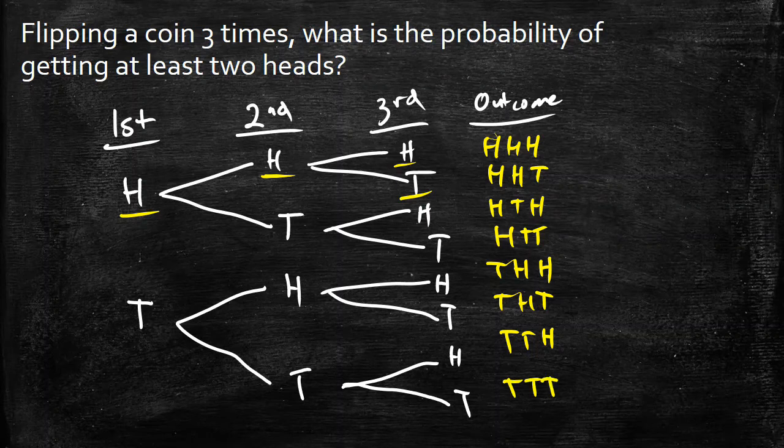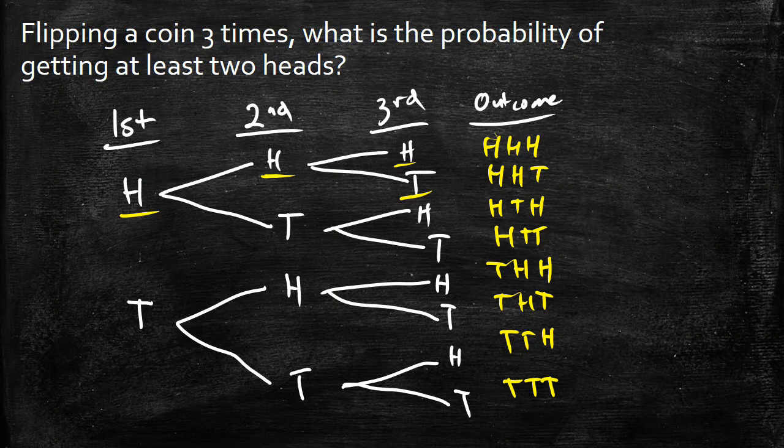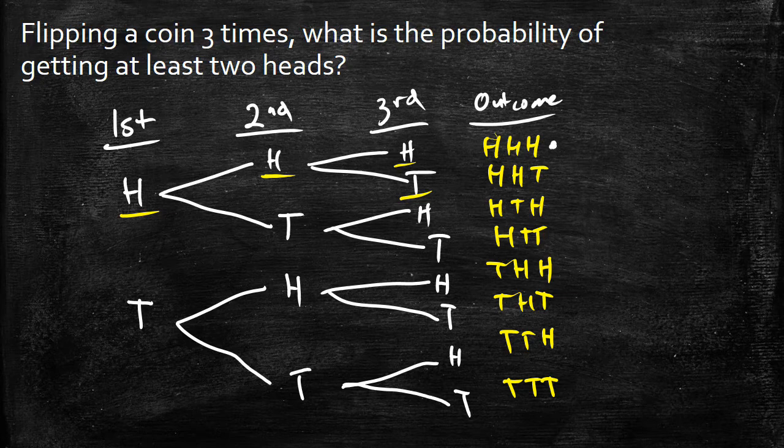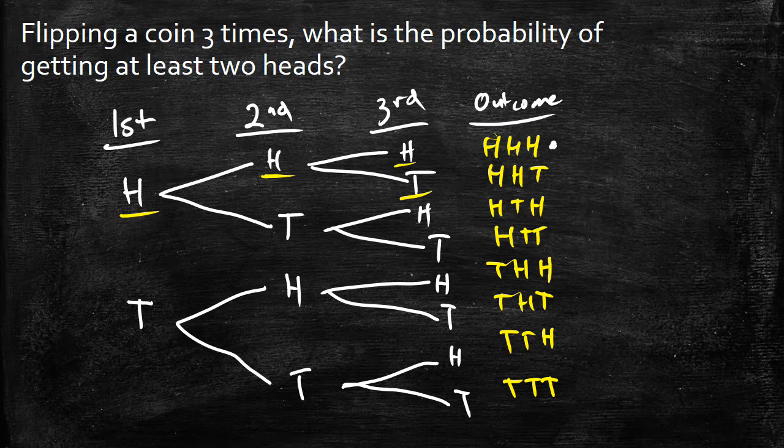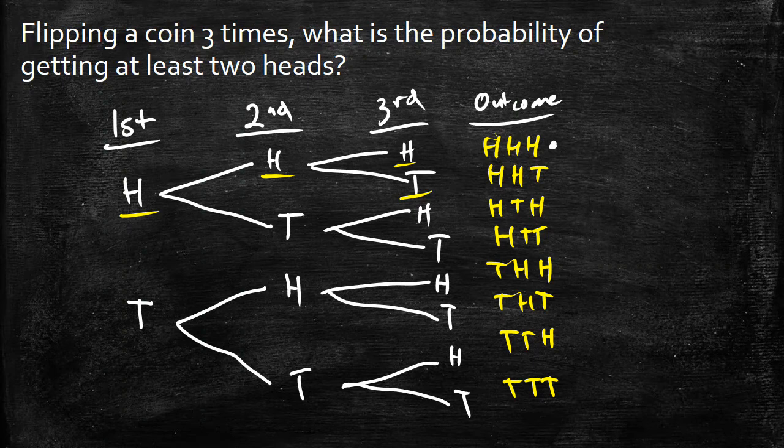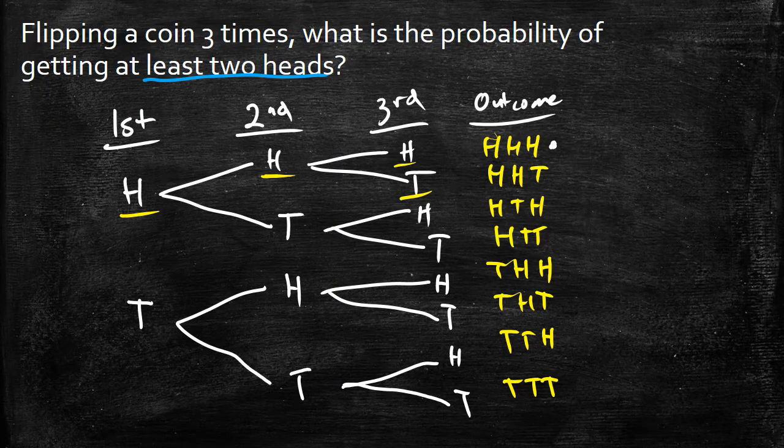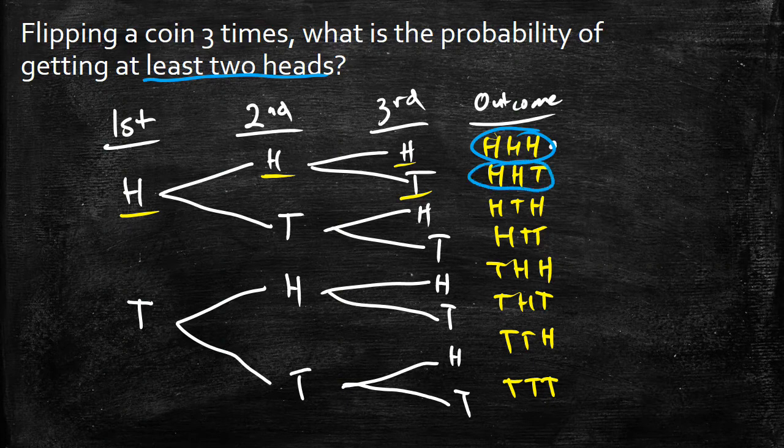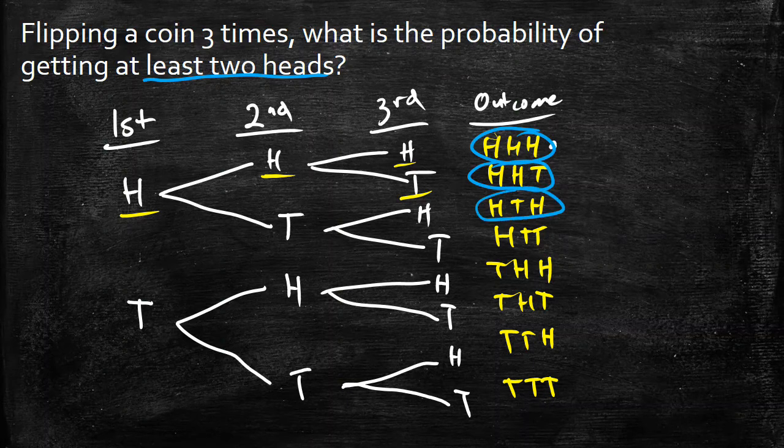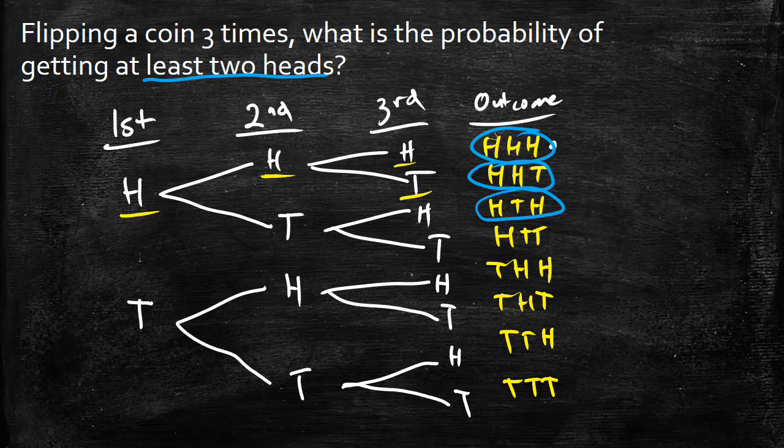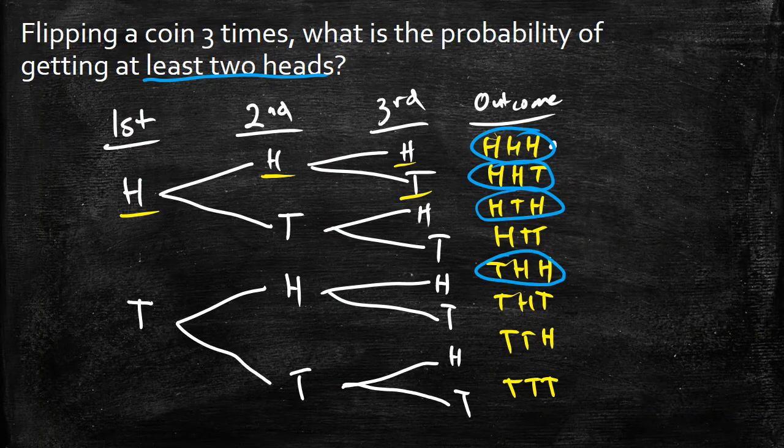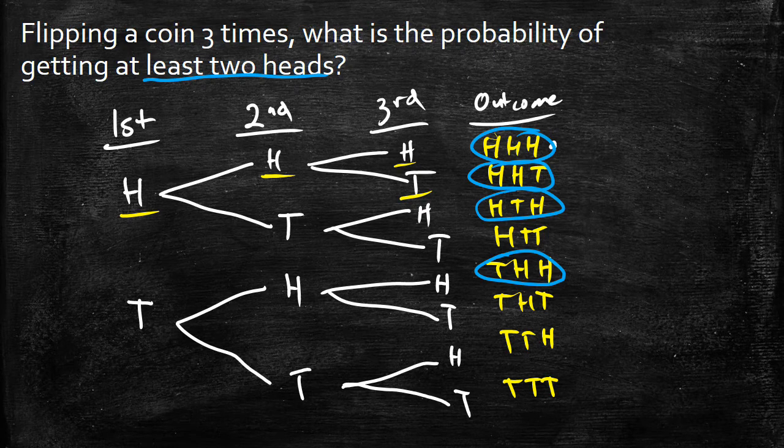And this sounds really confusing. It doesn't really mean much until we realize what these mean. This one right here would mean you've got three heads in a row. We could figure out the probability of that, but that's not what the question is asking us. The question is asking us to find the probability of getting at least two heads. So let's go through and let's circle which ones could have at least two heads. This one has three, so that's at least two. This one has two. Heads, tail, heads has two. Heads, tails, tails does not. Tails, heads, heads does. Tails, heads, tails, nope. Tails, tails, heads, nope. Tails, tails, tails, no. So it looks like we have four favorable outcomes.